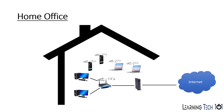With SOHO Networks in a home office, you're going to have your home router, a couple of computers, all your cell phones, tablets, and things like that connected into the network via Wi-Fi. Not a whole lot of equipment in a home office.